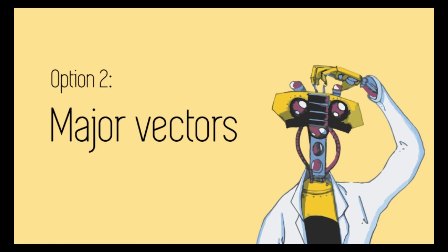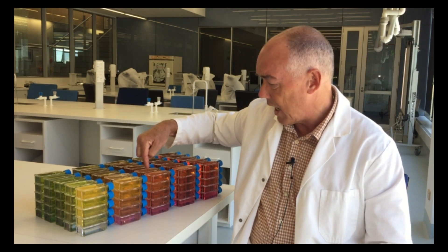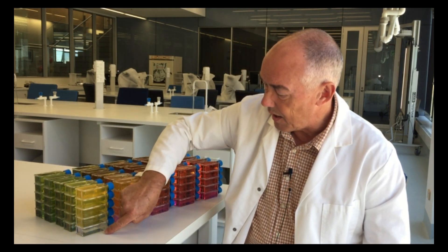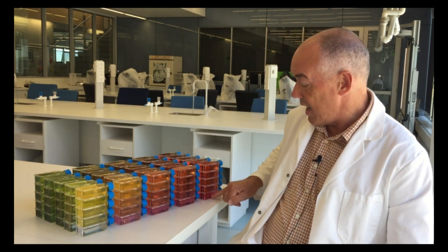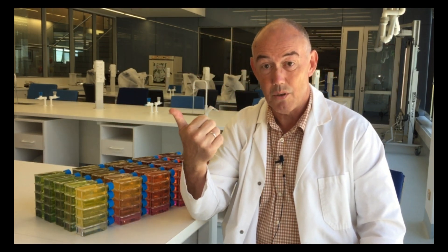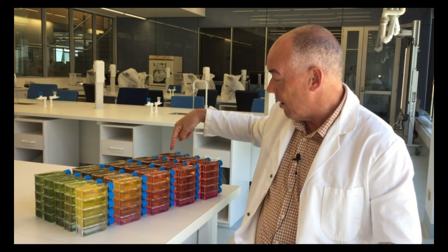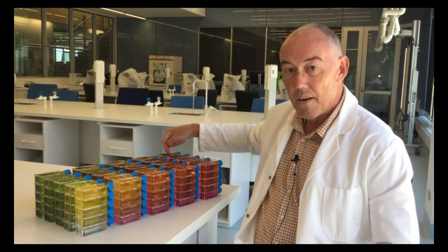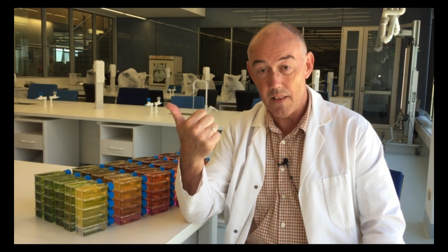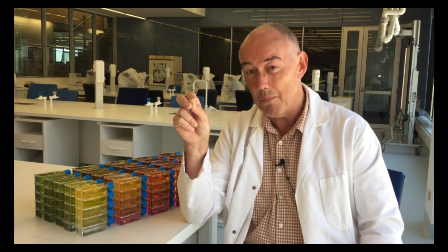One obvious option is to ask: am I really interested in every individual treatment combination, or am I interested in the primary vectors — this one for pCO2, this one for oxygen, and this one for salinity — and maybe the combination of those three: the diagonal that goes through the middle of the cube. That diagonal will tell me the individual effects of salinity, the individual effects of pCO2, and the combined effects of all three, though it won't tell me the two-way interactions.